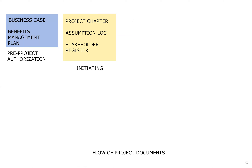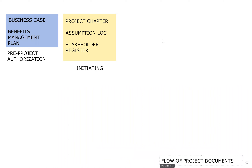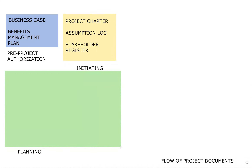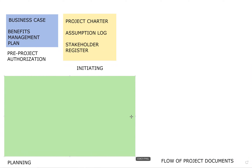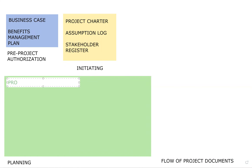Then we go into planning, and planning is quite a beast. The majority of the project documents we talk about are from the planning process group. The first thing often talked about is the project management plan. You've got to understand the dynamic here — the project management plan at first is skeletal. It is not fleshed out. You're starting off with a skeletal plan that documents things of commonality like configuration and change.